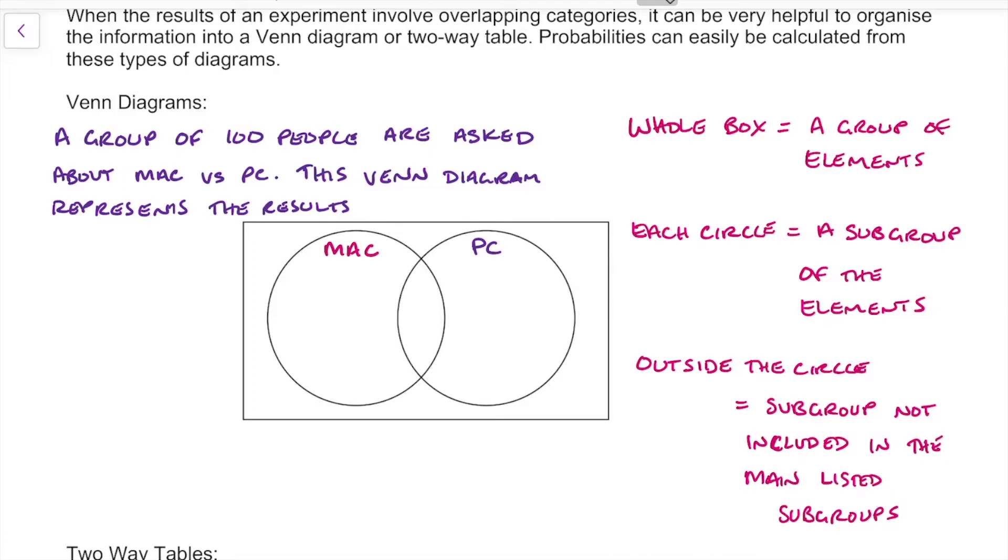So our Mac users, there are 31 of that 100 people that will only use Macs. Then the PC, there were 50 people that only wanted to use PCs. In the middle, we had 12 people that liked using both. And then on the outside, we had seven people who didn't like using either Macs or PCs.